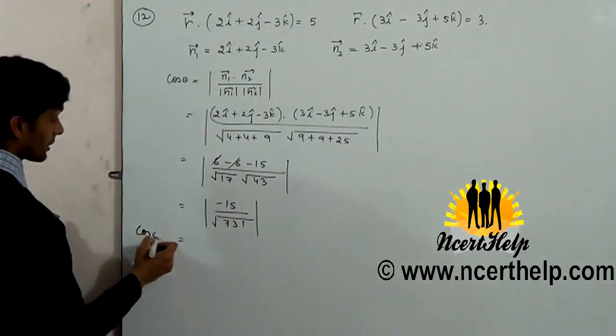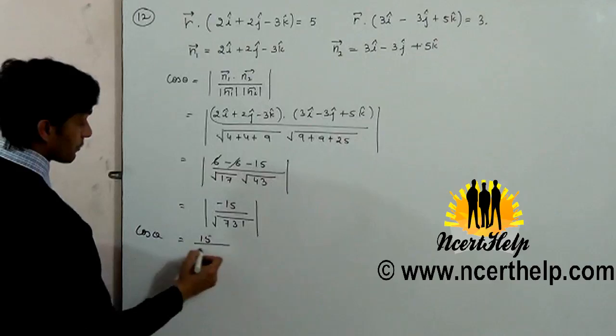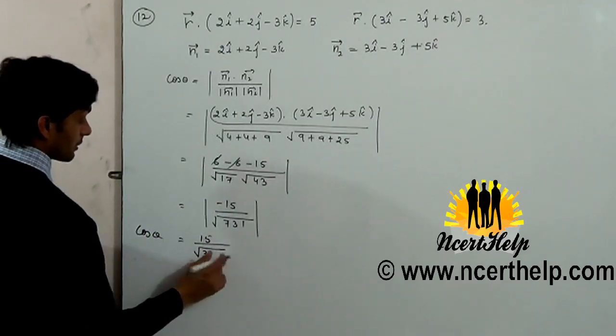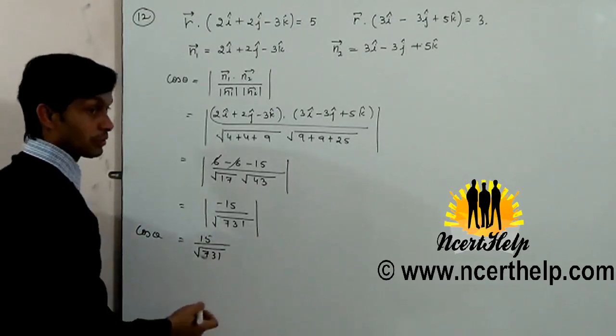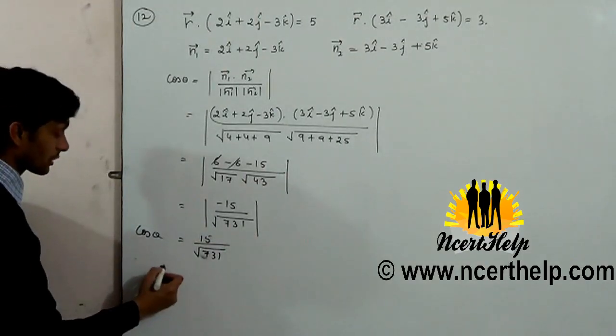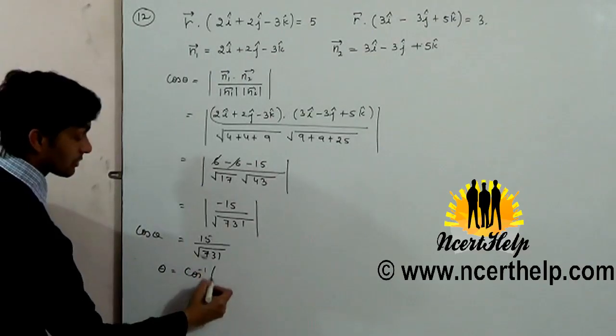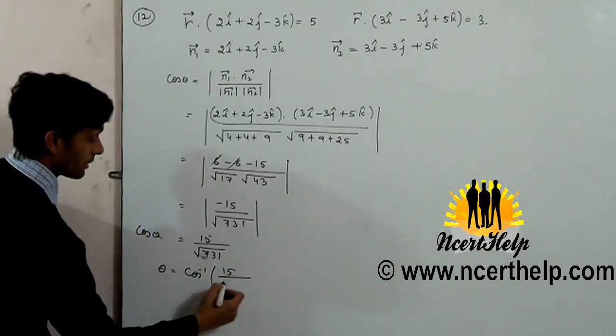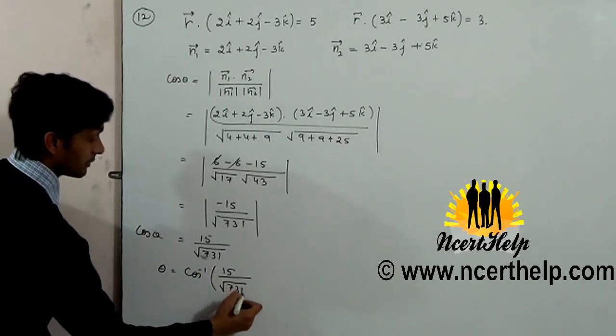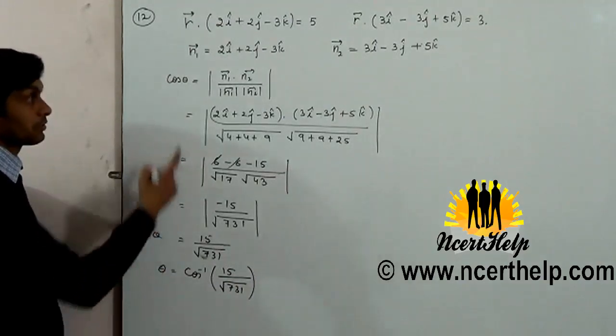15 by root 731. If the value is solved, cos theta - what will happen? Cos inverse 15 by root 731. This is the angle between these two planes.